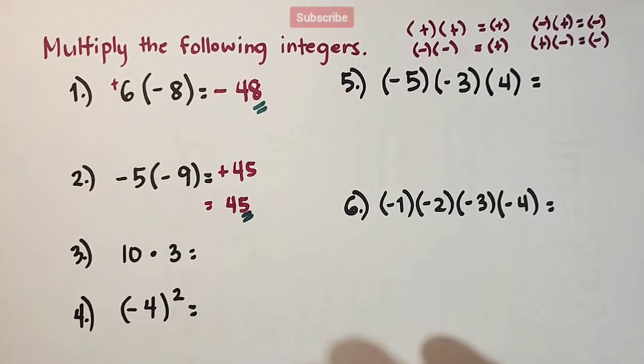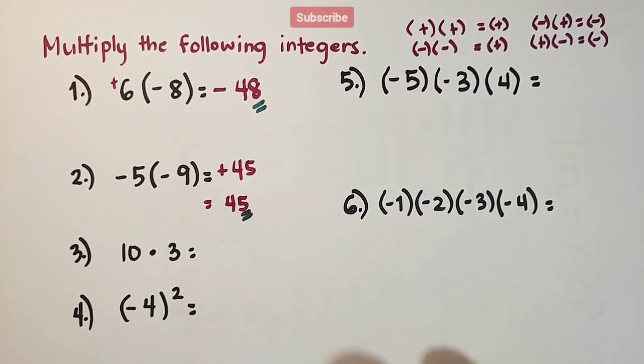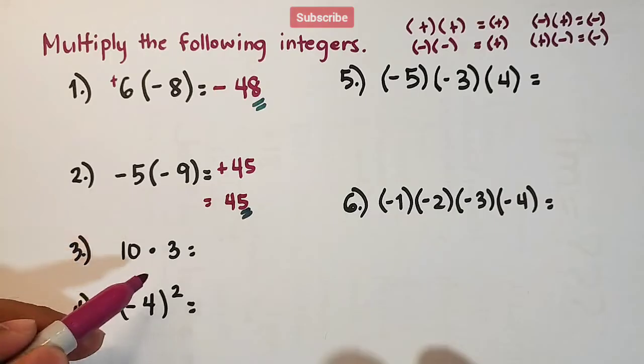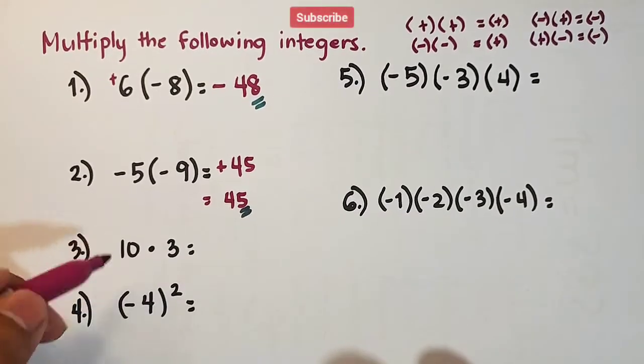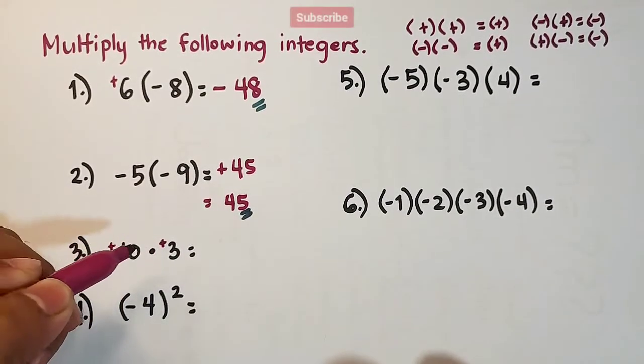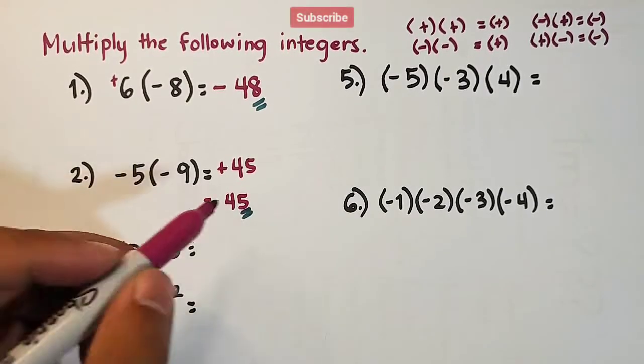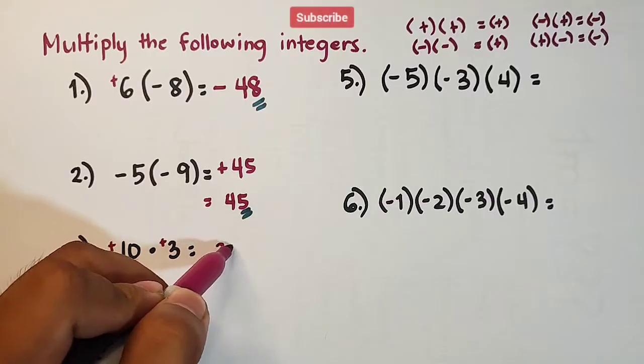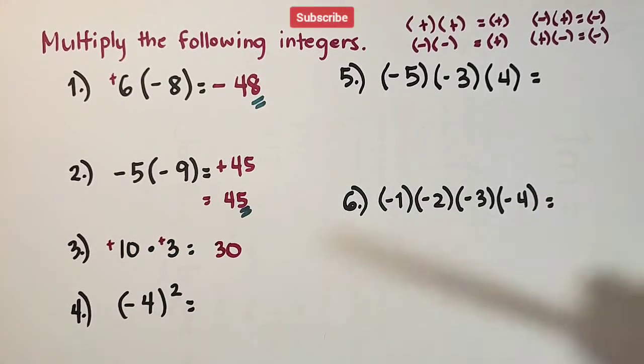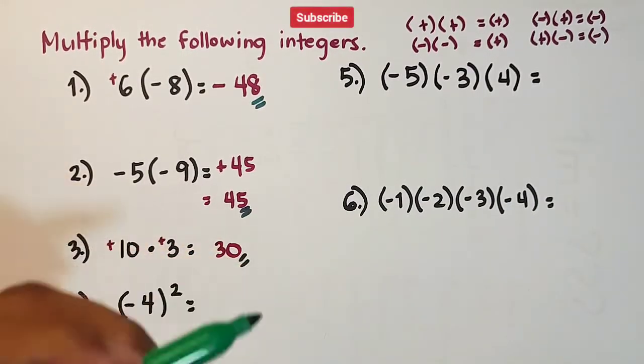Now, let's move on with number three. Number three, this is very simple. We have 10 times 3. Your 10 is positive. Your 3 is another positive. So, positive is our answer here. And simply multiply 10 and 3. That will give you the answer of 30.